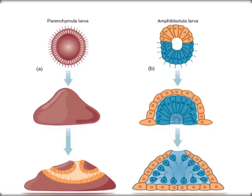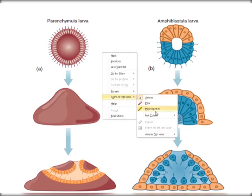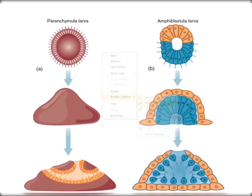There are typically two types of larvae: the parenchymula larva and the amphiblastula larva. Most commonly seen is the parenchymula larva. After two to three days of free-swimming, the larva attaches itself to a substrate and then develops into an adult individual.